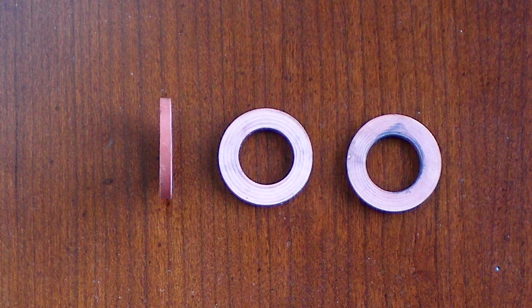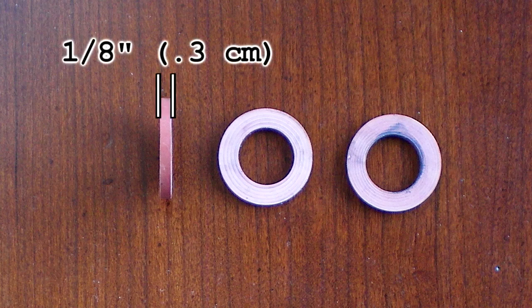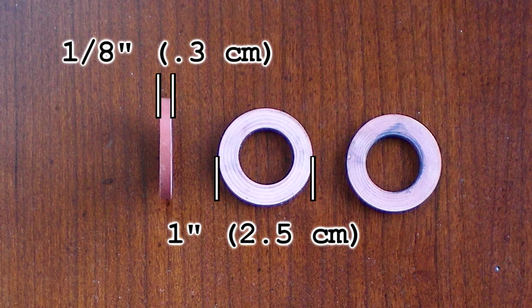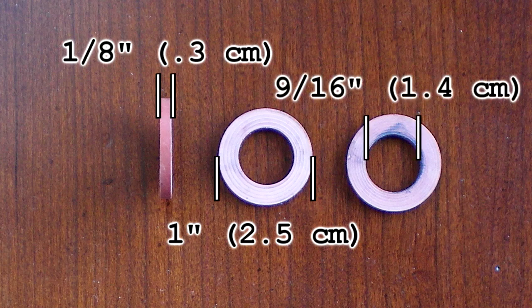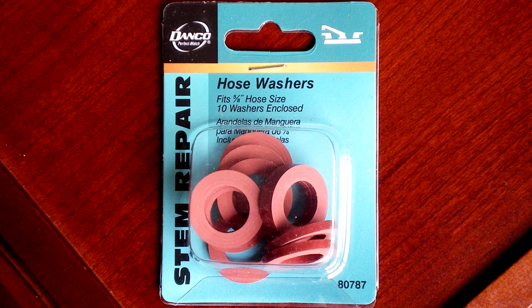The orange rubber washers which are attached to the Pyrex test tube are 1 1 8th inch thick. The outer diameter of each rubber washer is 1 inch and the inner diameter is 9 16ths. You can find these rubber hose washers at any hardware store such as Home Depot or True Value Hardware.